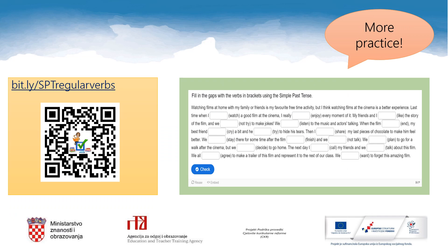For more practice, follow this link: bit.ly/spt-regular-verbs, or just scan this QR code. When you need to fill in a negative sentence, use the short form of 'did not' — in other words, 'didn't'. Don't forget to pause the lesson to do this task.